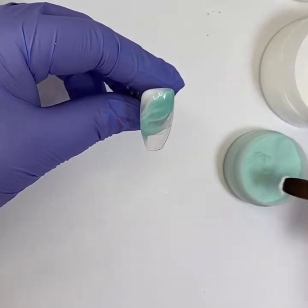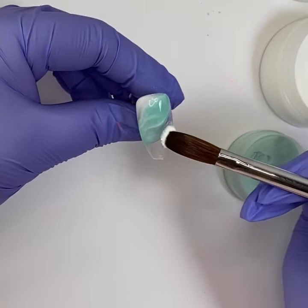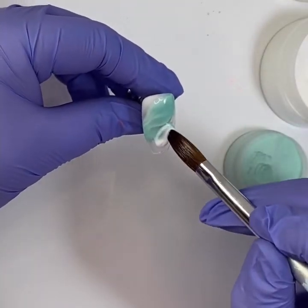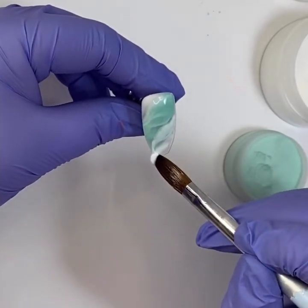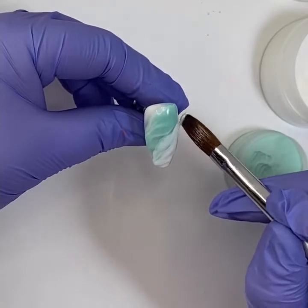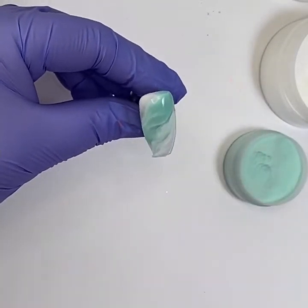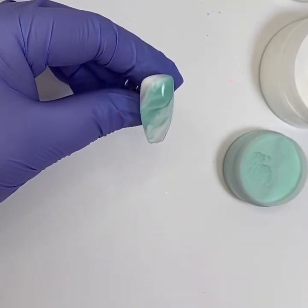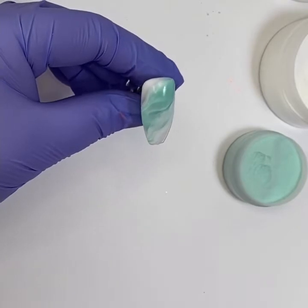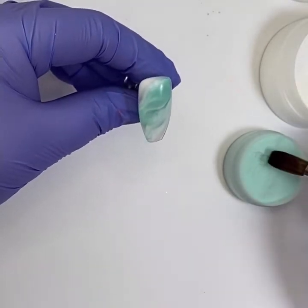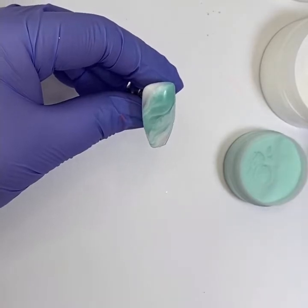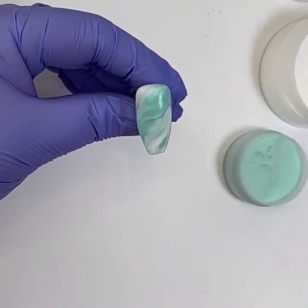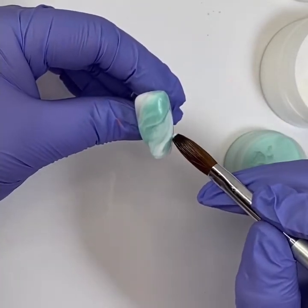So I always try with a marble to kind of go on a diagonal almost with the brush. Like swoosh up one side and down the other, up one side and down the other. And depending on what kind of marble effect I'm looking for—Monty, lie down, baby—depending on what kind of effect I'm looking for, it depends which technique I use.